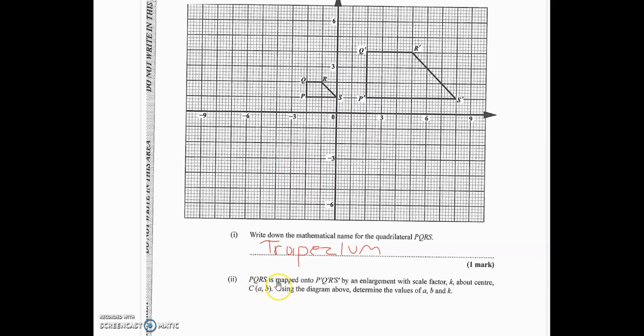Now part 2 says that PQRS is mapped onto P'Q'R'S' by an enlargement which has scale factor K about the center C and the coordinate of the center is (A,B) using the diagram above determining the value of A, B and K. So K is the scale factor, A and B represents the coordinate of the center of enlargement. Alright now finding center of enlargement is pretty straightforward. All we need to do is to draw a straight line connecting any two corresponding points. What do I mean by that? P would correspond to P' and Q would correspond to Q' so I could draw a straight line from P to P' and I extend that line and I could draw a straight line from Q to Q' and we also extend that line. We know wherever these two lines intersect that is our center of enlargement.